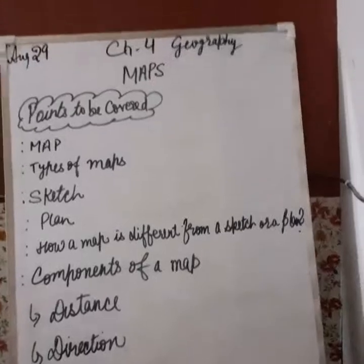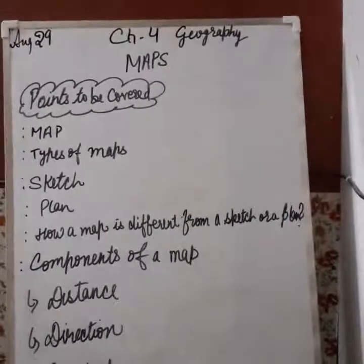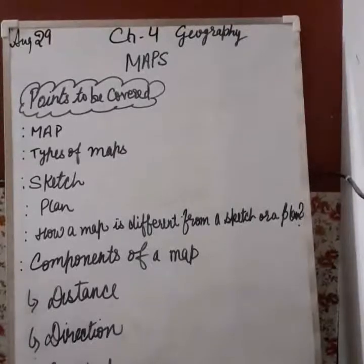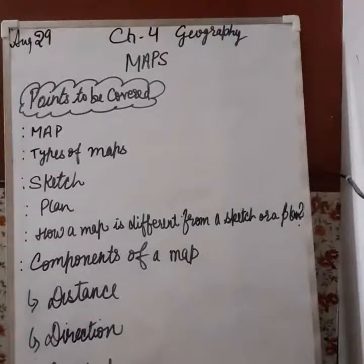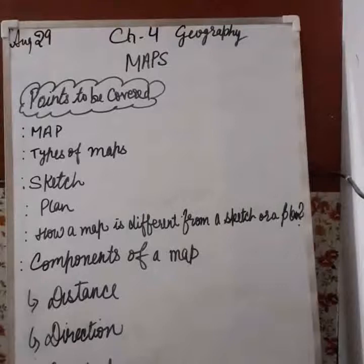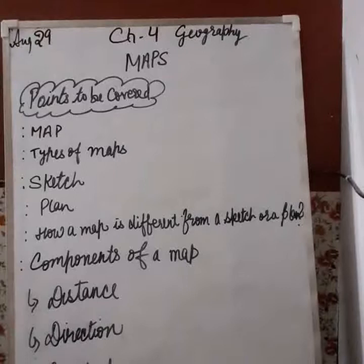Good morning students, today we are going to take up chapter 4 of the geography book, which is about maps. In this chapter we will learn in detail about maps, study the different kinds of maps, understand how a map is different from a plan and sketch, and learn about the components of a map — that is distance, direction and symbols.